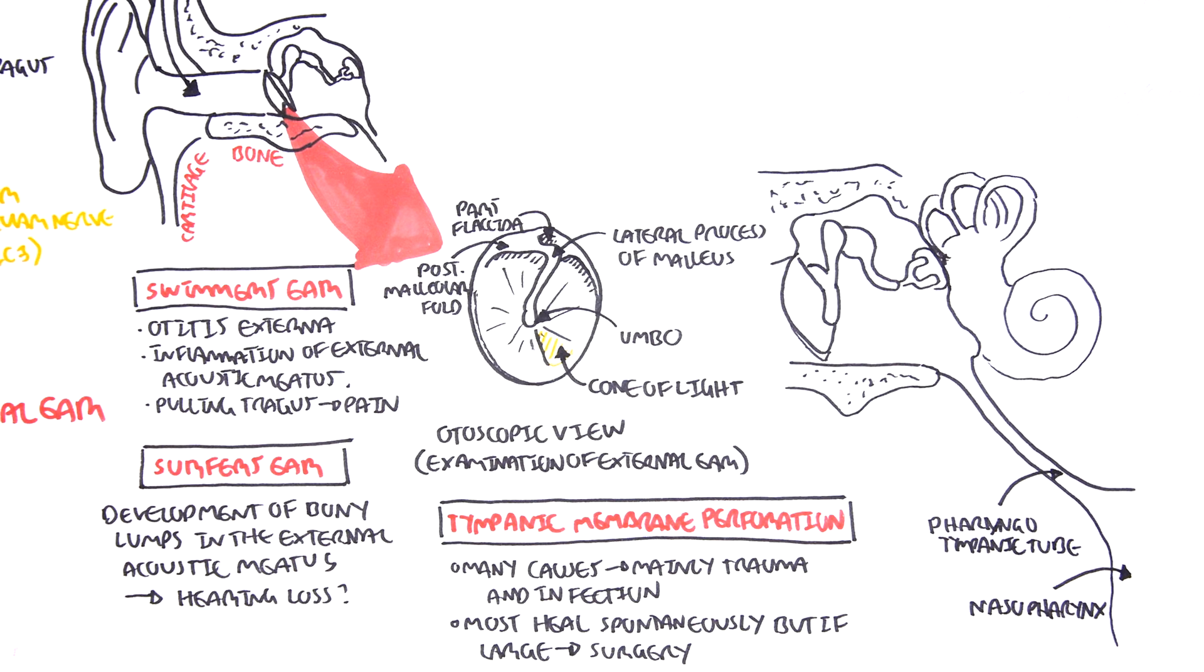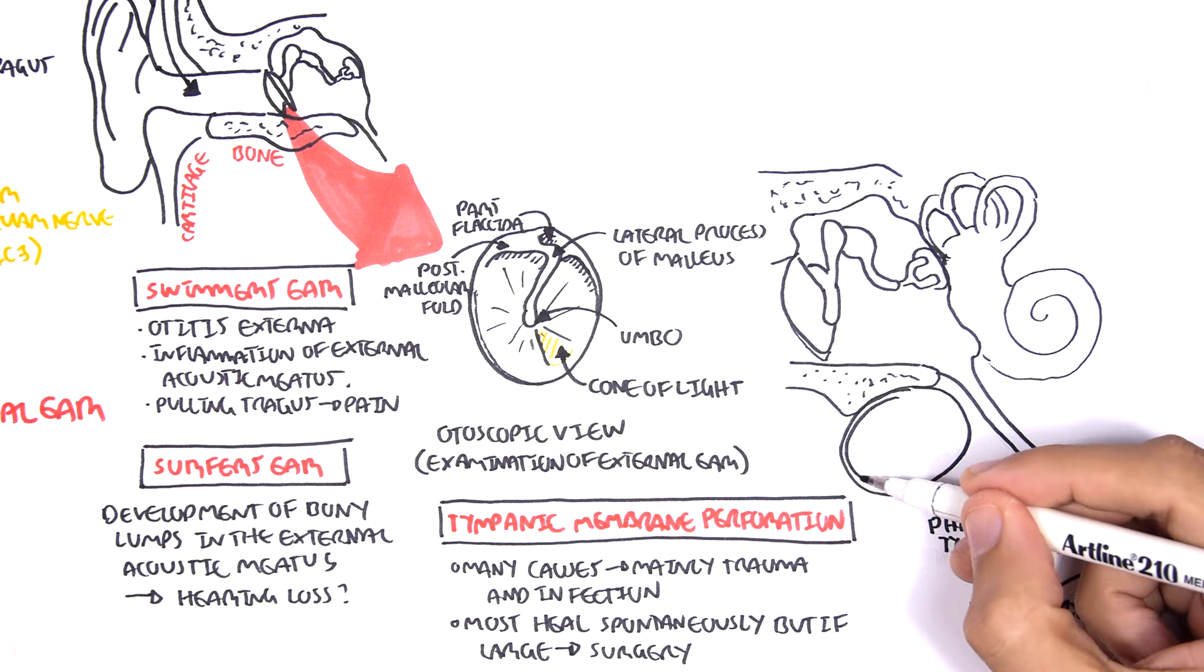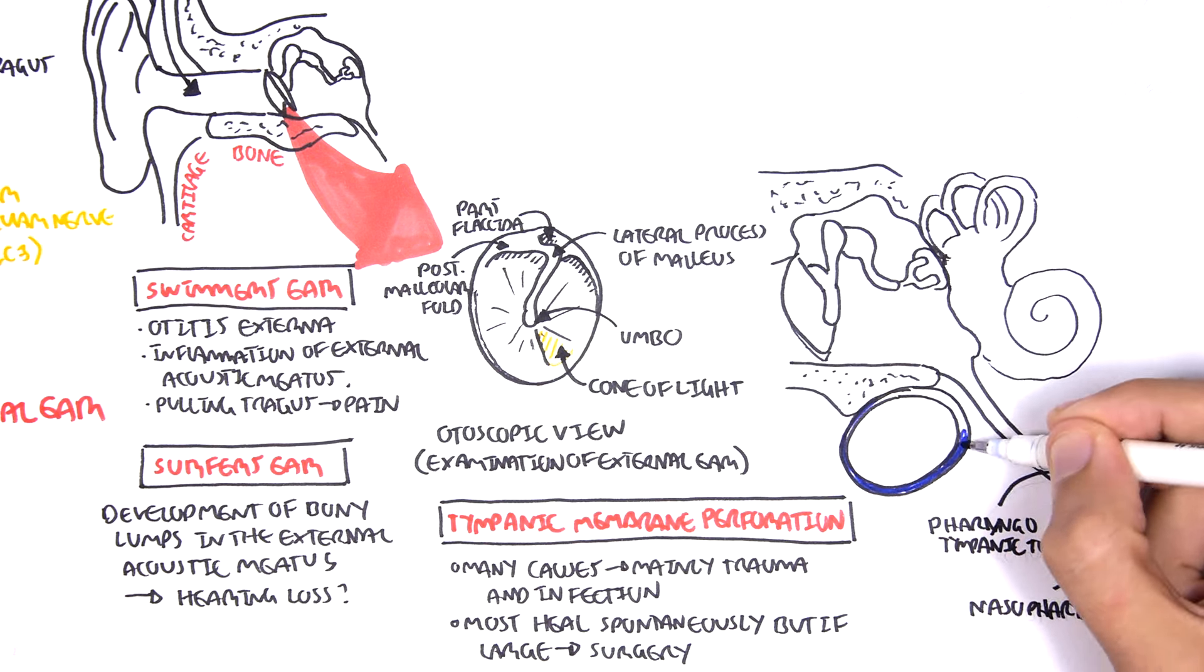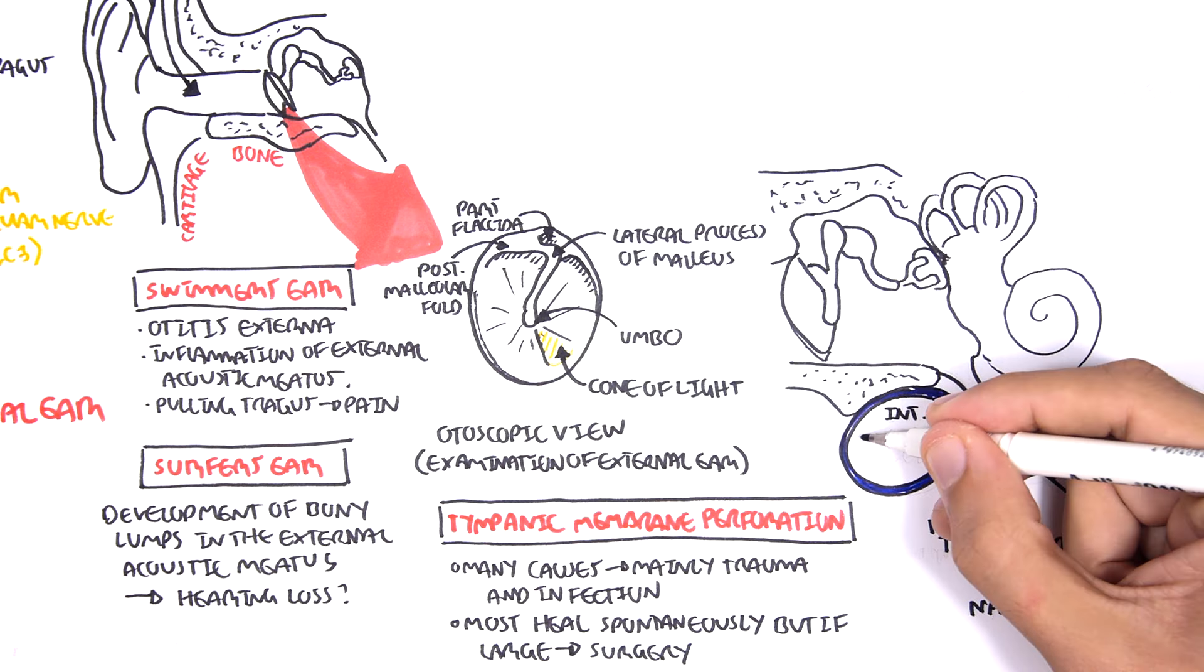An important part of the pharyngotympanic tube is that in children, it's more horizontal and shorter. Thus, children are more susceptible to middle ear infections that arise from the nose or mouth and can travel up to the middle ear. Inferior to the middle ear, you can find the internal jugular vein.